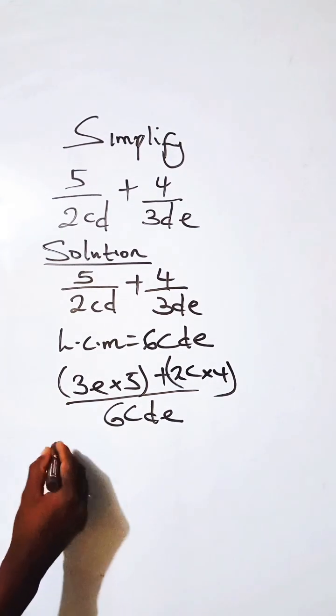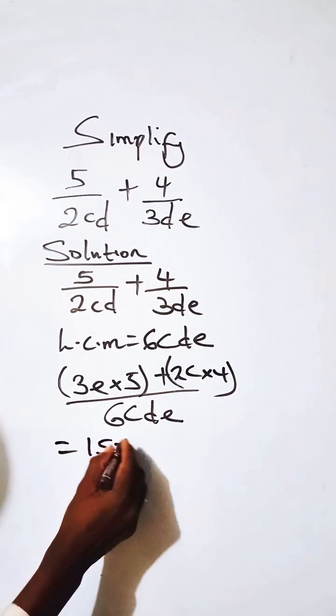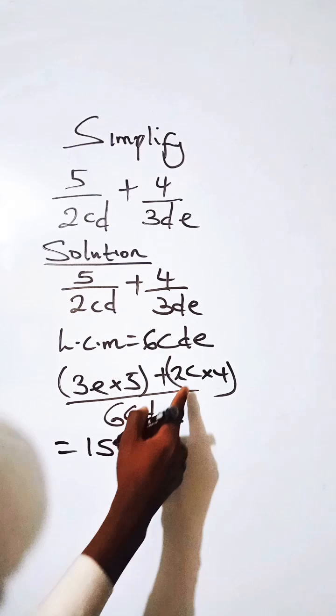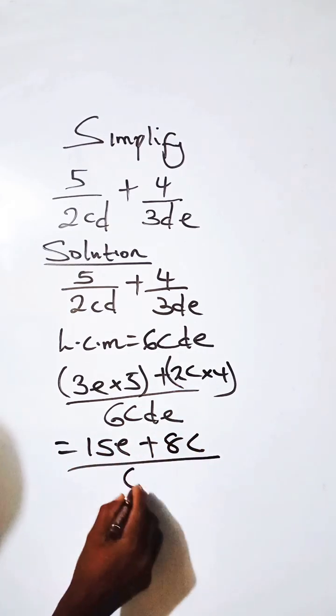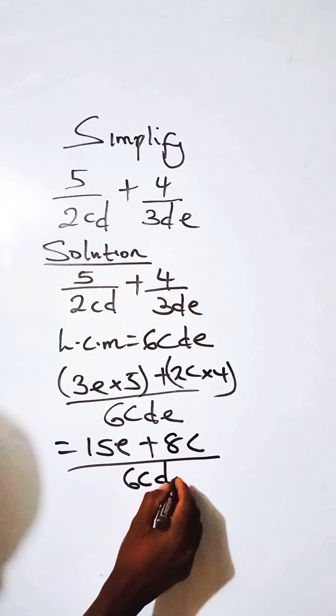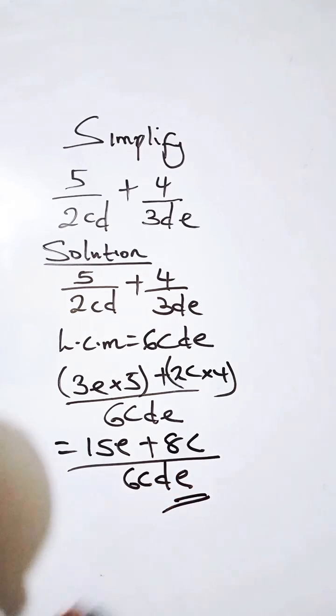So from here, 3E times 5, we have 15E. Plus 2C times 4, we have this as 8C over 6CDE. Thank you very much.